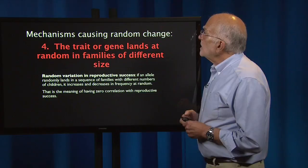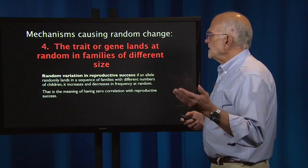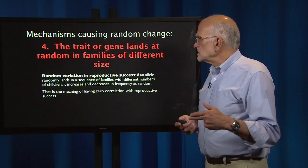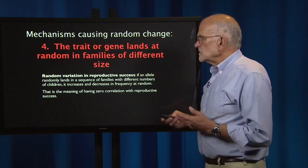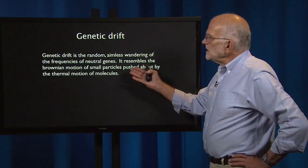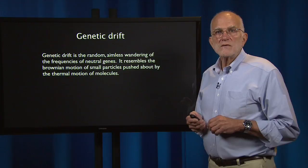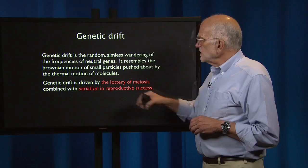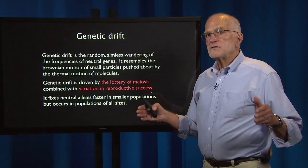The fourth mechanism is that a trait or gene lands at random in families of different sizes. That is what we mean by random variation in reproductive success: if an allele randomly lands in a sequence of families with different numbers of children, it will increase or decrease at random in frequency — a zero correlation with reproductive success. This produces genetic drift, the random, aimless wandering of frequencies of neutral genes. It resembles the Brownian motion of small particles pushed about by the thermal motion of molecules. Genetic drift fixes neutral alleles faster in smaller populations, but it occurs in populations of all sizes — it is not confined to small populations.